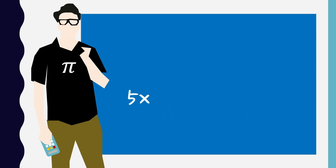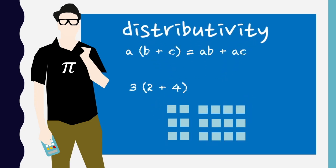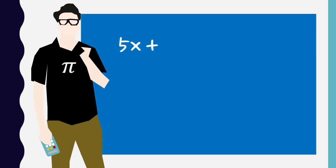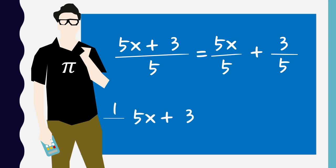We also need to remember how distributivity works. So again, starting from 5x plus 3, I can divide by 5. Now this is the same as multiplying by a fifth, but I need to remember that the multiplication applies to both terms inside the brackets.